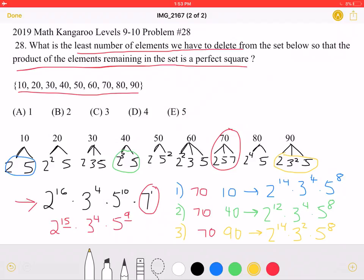As we can see, we have 3 different ways to get a perfect square, and each time we remove 2 elements. So the least number of elements we have to delete would be 2, a 70, and then a 10, 40, or 90, which is answer choice B.